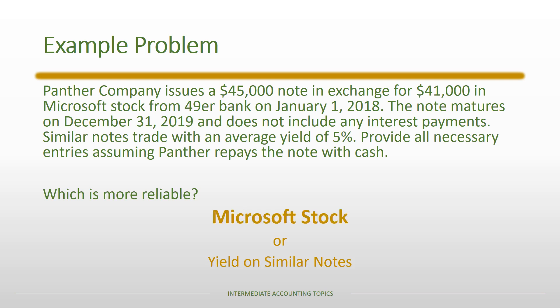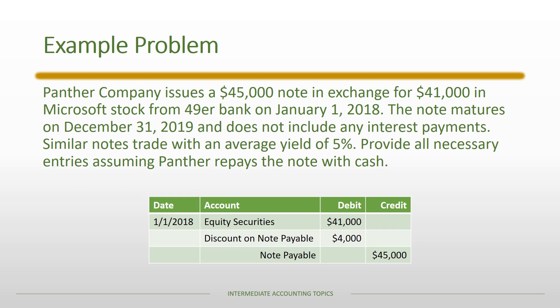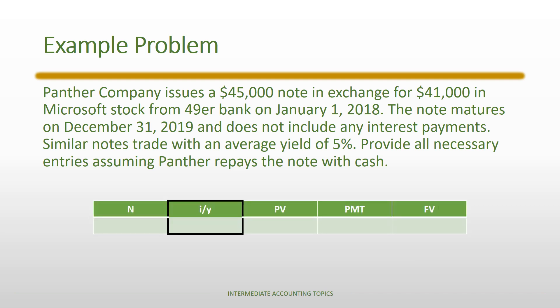For the initial transaction, we debit equity securities for $41,000. The note payable has a face value of $45,000, so after including the discount, the net note is also $41,000 — both halves of the transaction are assigned the fair value of the Microsoft stock. We then use the time value of money framework to solve for the yield. N = 2 (two-year note), present value = $41,000, no payments, and face value = $45,000 at maturity. Solving for the yield gives us approximately 4.764% — or roughly 5% — on this note.